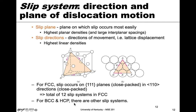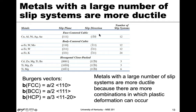For BCC and HCP there are other slip systems, but it tends to go by the highest planar and linear densities for planes and directions respectively. Looking at this table from your textbook, for FCC metals — copper, aluminum, nickel, silver, gold — the slip planes are {111} and the slip direction is of the type ⟨1 1̄ 0⟩. The combination gives 12 slip systems.